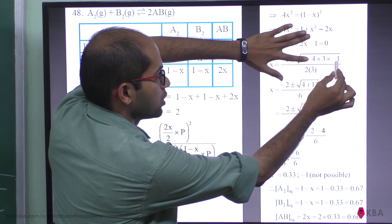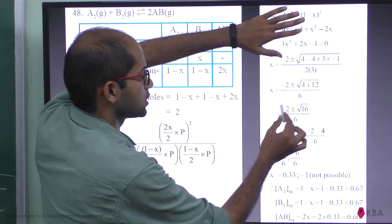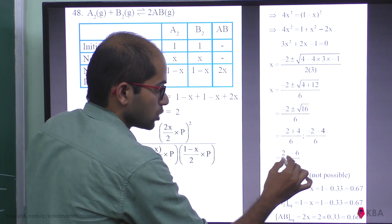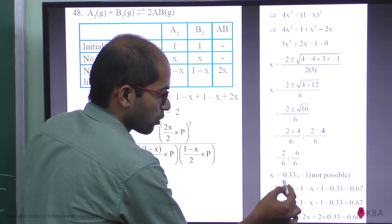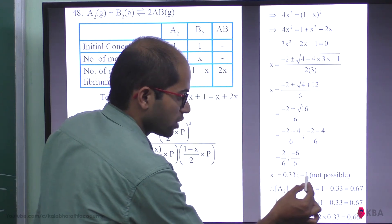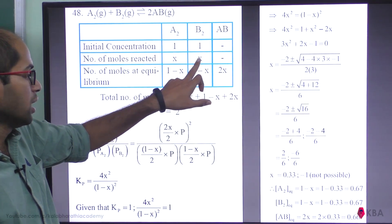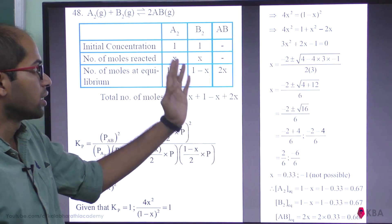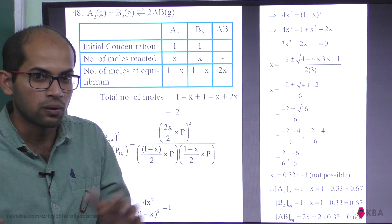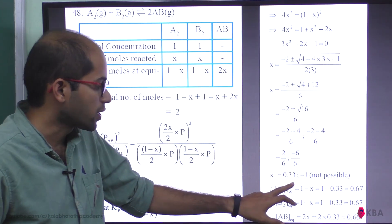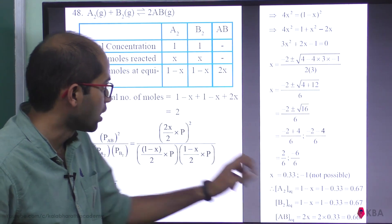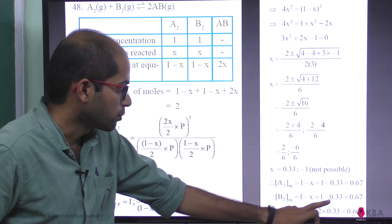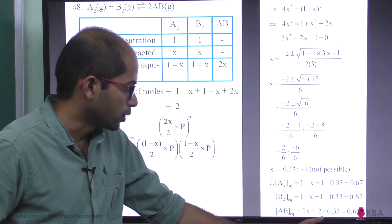12 times minus 1 is minus 12, and minus 4ac becomes plus 12, so 4 plus 12 is 16. The square root of 16 is 4. So x equals (minus 2 plus 4) divided by 6, giving x equals 1/3 ≈ 0.33. The negative root, x equals minus 1, is not physically possible.